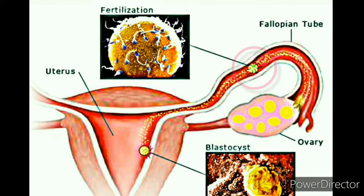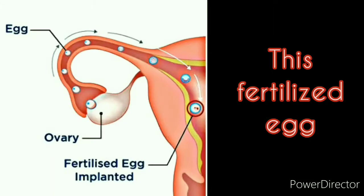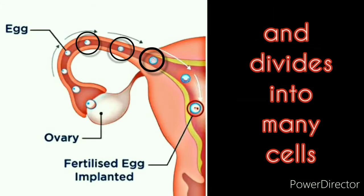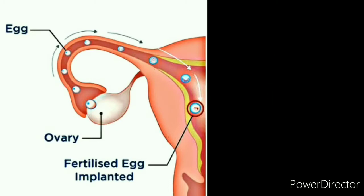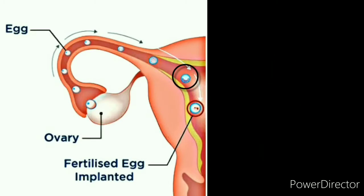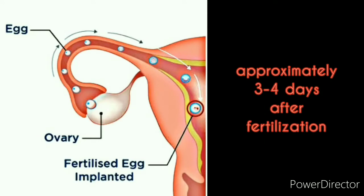We know that fertilization occurs when the fusion between the sperm and the ovum takes place inside the fallopian tube of the female reproductive system. This fertilized egg starts to grow fast and divides into many cells, then leaves the fallopian tube and enters inside the uterus or womb approximately three to four days after fertilization.